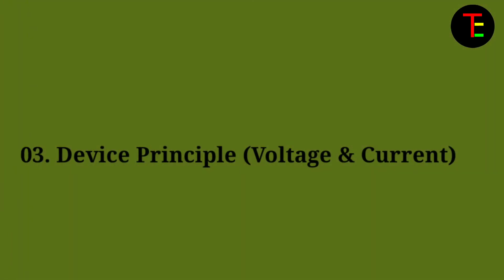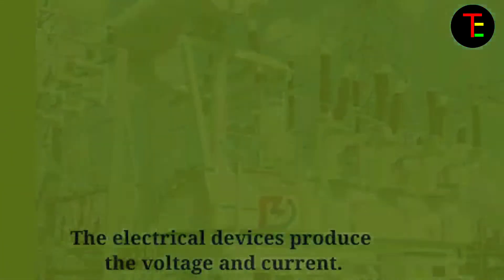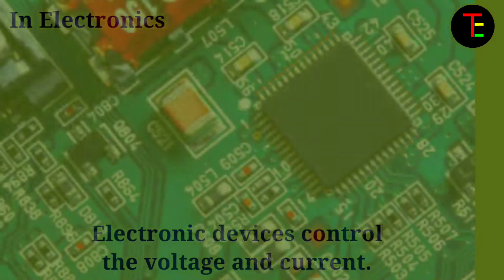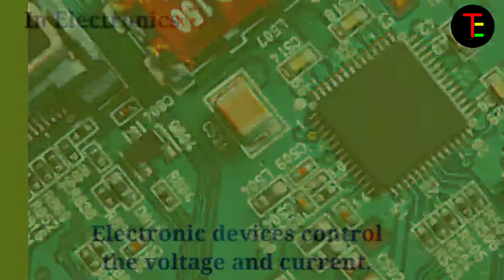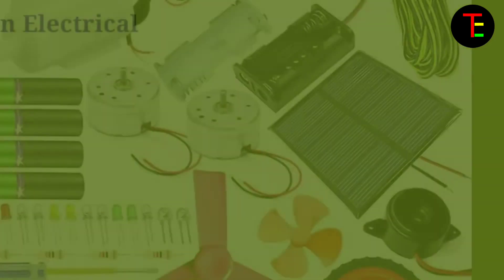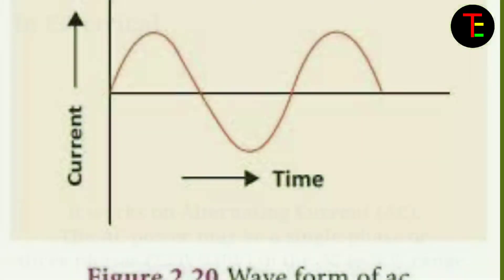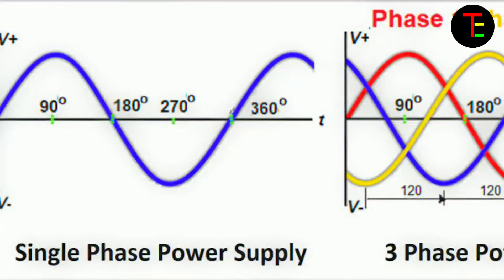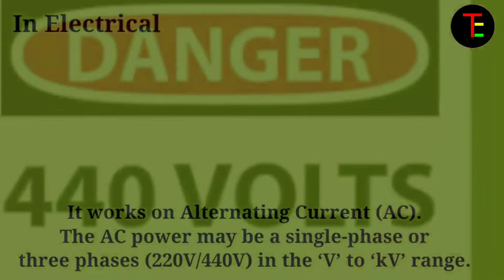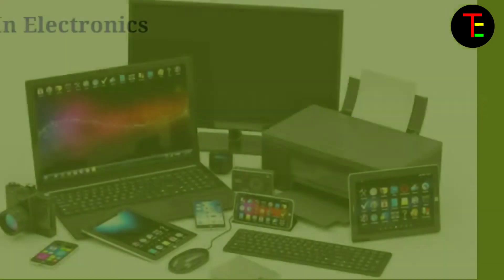No.3 Device principle: In electrical, the electrical devices produce the voltage and current. No.4 Current functions: In electrical, it works on alternating current. The AC power may be single phase or three phase, 220 volt or 440 volt, in the volt to kilovolt range.